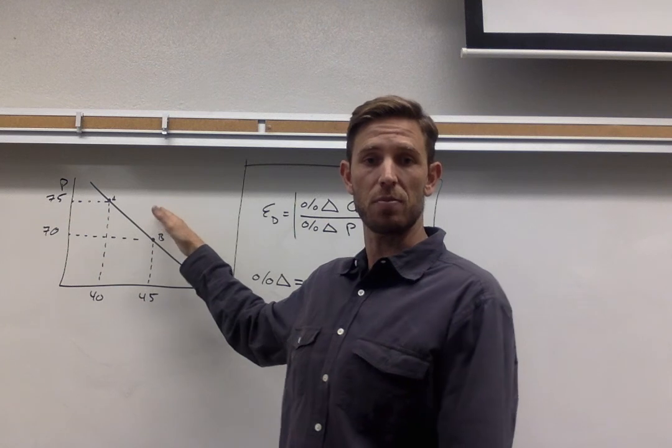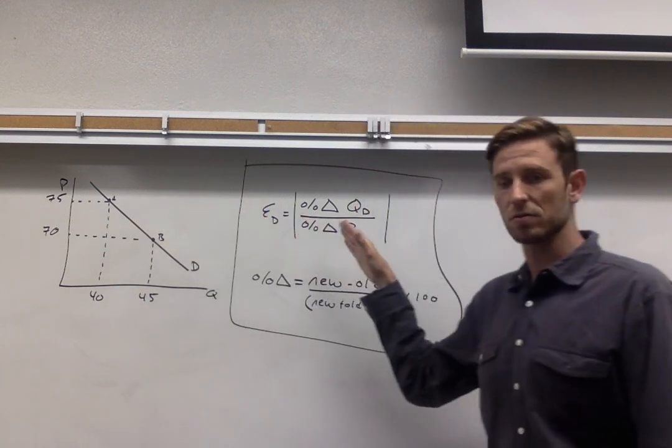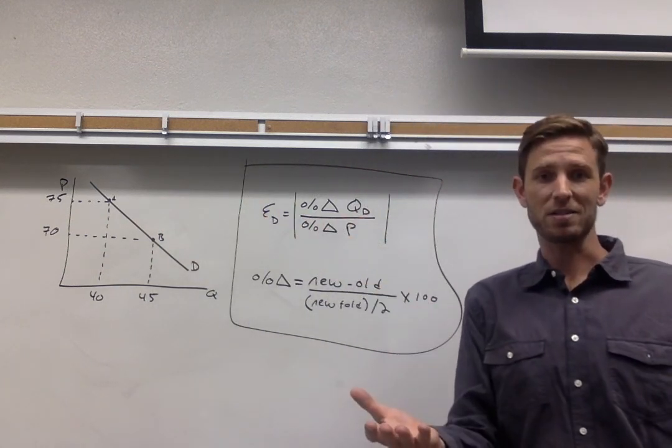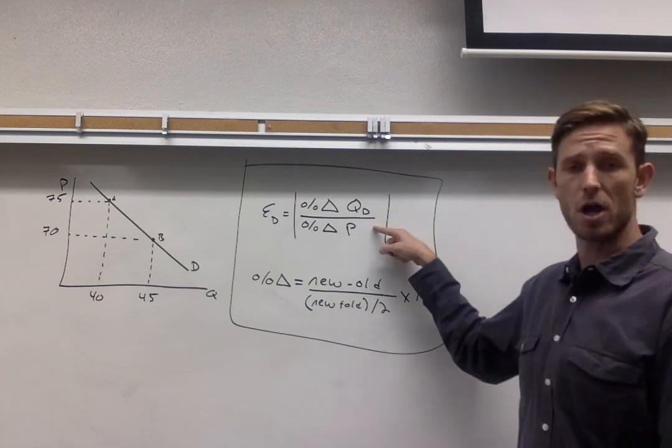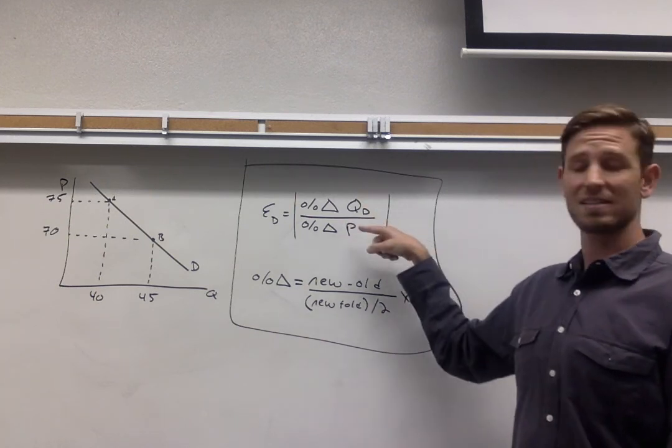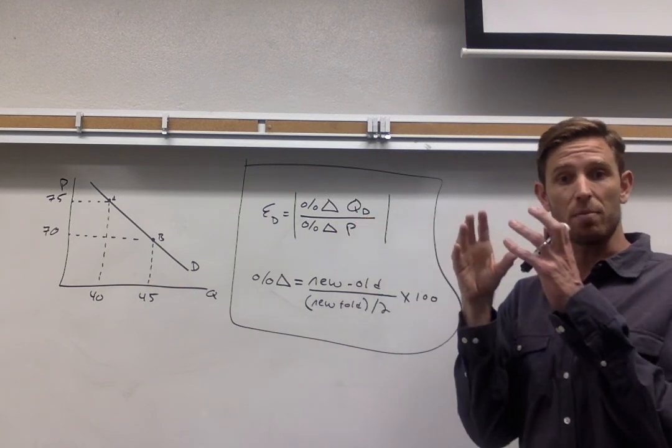So this might be given to you in a problem setup, but I've circled here the information that you would be expected to know. First up, you're going to want to know how price elasticity of demand is calculated. What's the formula for putting together this one number?